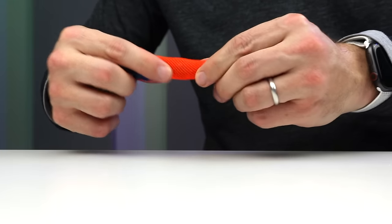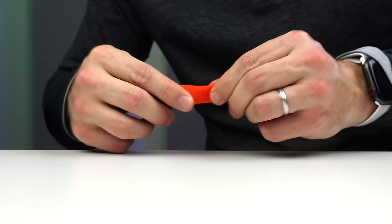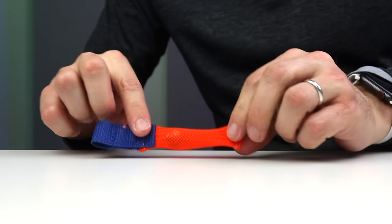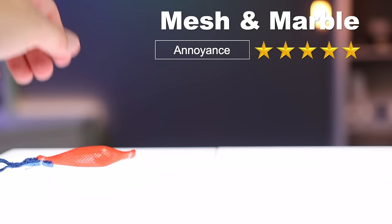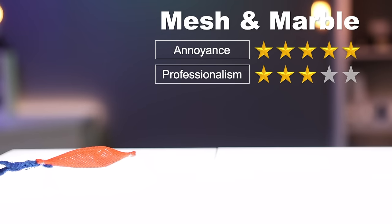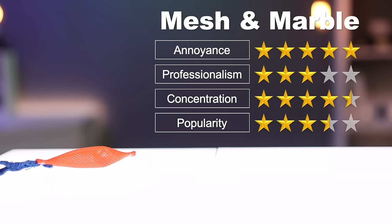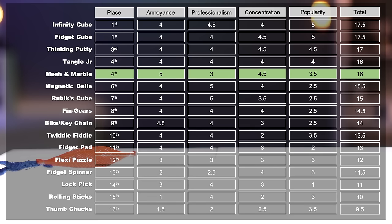Maybe the simplest and the cheapest on the list is the mesh and marble. It has a marble trapped in this mesh, and you just move it around and fidget with it. Simple as that, but it's pretty effective. I rate it as five stars for annoyance, three stars for professionalism, four and a half stars for concentration, and three and a half stars for popularity, putting it tied at fourth place.